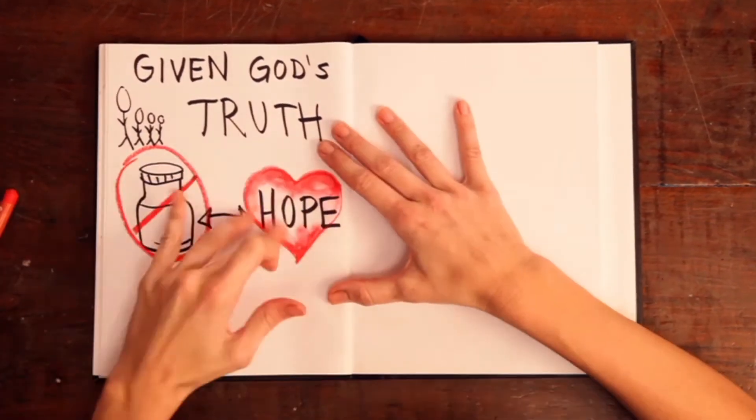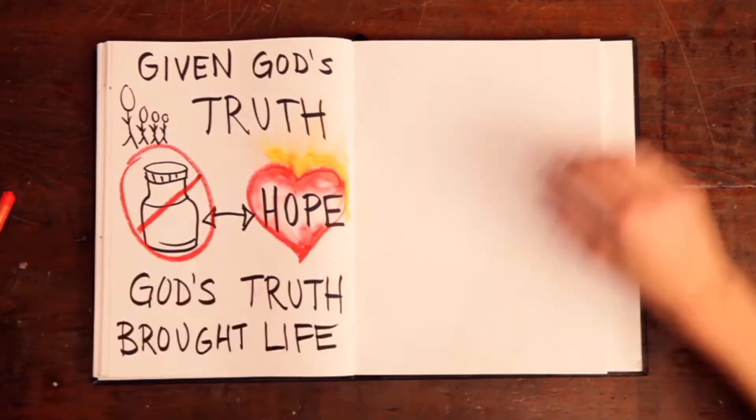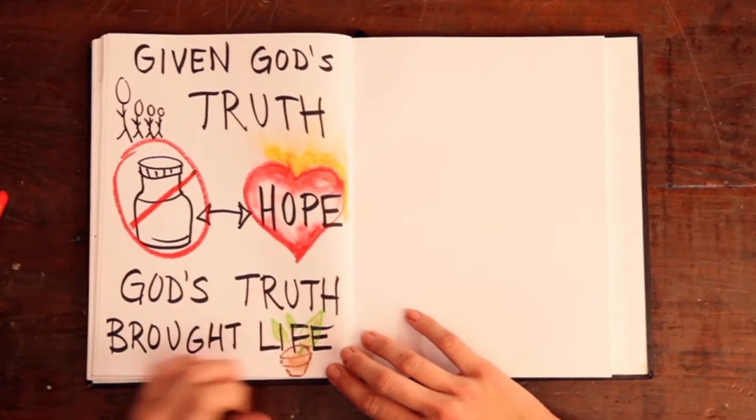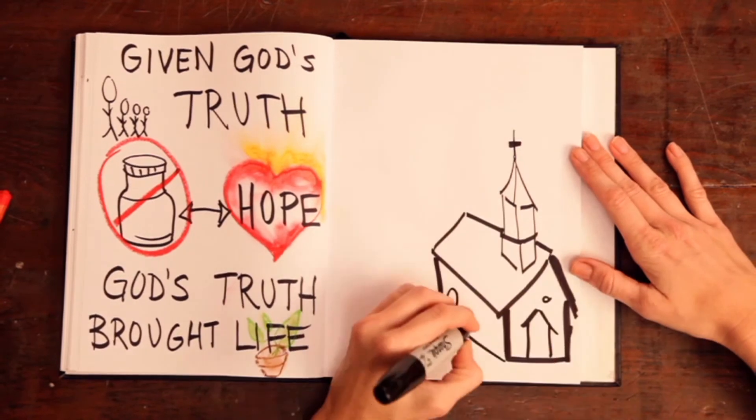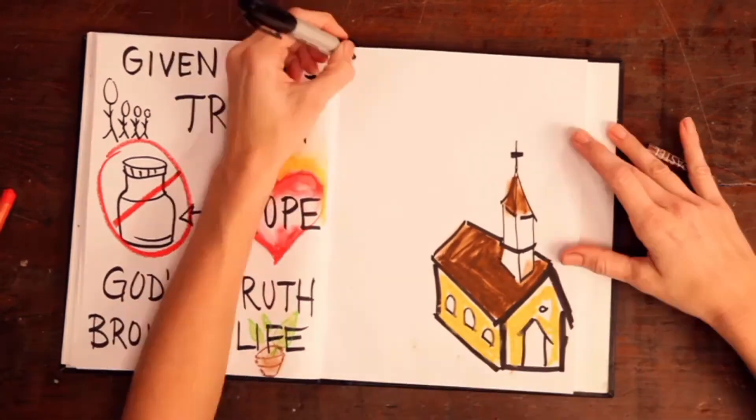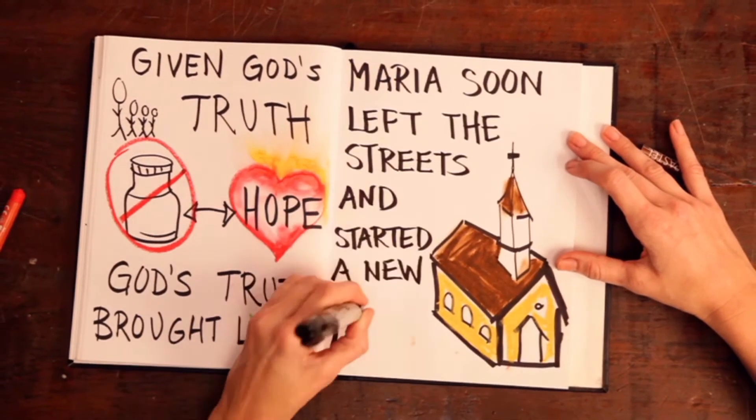Maria traded the pills for hope as God's truth brought life to her despair. Having a local church provide for her, Maria soon left the streets and started a new life.